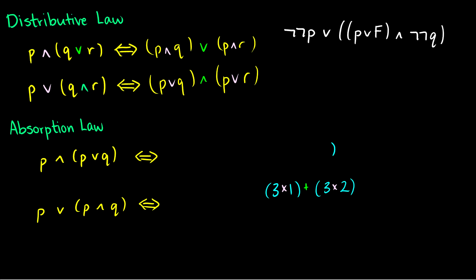The absorption law states that P∧(P∨Q) and P∨(P∧Q) both reduce to P. We can see this with a truth table: P∧(P∨Q) is true only when P is true, and P∨(P∧Q) is also true only when P is true.